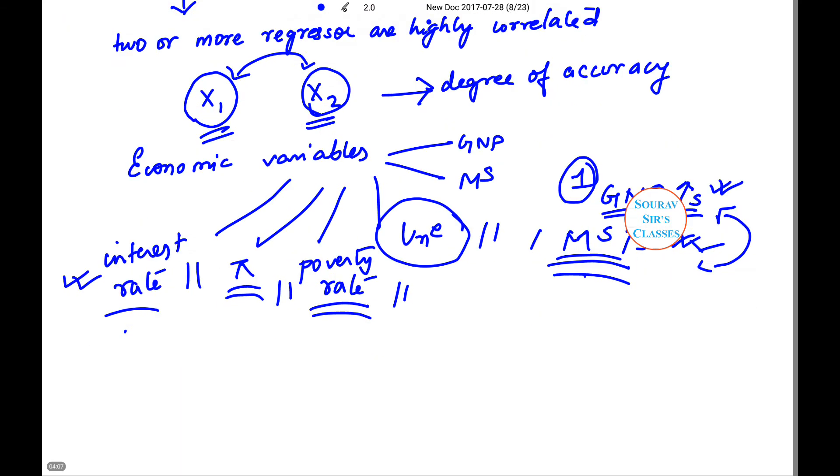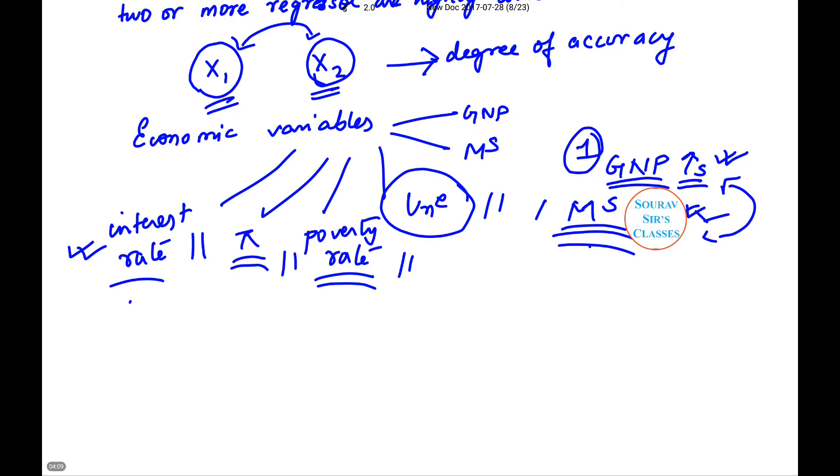If I consider a regression equation given by GNP = beta naught plus beta 1 money supply plus beta 2 interest rate plus beta 3 inflation rate plus beta 4 poverty rate, then since all these variables are correlated to each other, there will be multicollinearity.